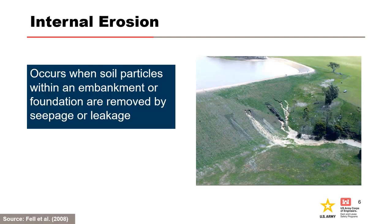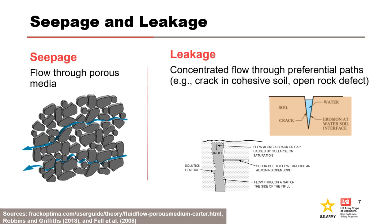Piping is actually the combination of a process of internal erosion in which a number of phases must occur and be sustained in order that a pipe develops through the embankment or foundation and allows the passage of considerable quantities of water, which may lead to a breach. Internal erosion occurs when soil particles within an embankment or foundation are removed by seepage or leakage — it requires a soil particle that can move and somewhere for it to go.